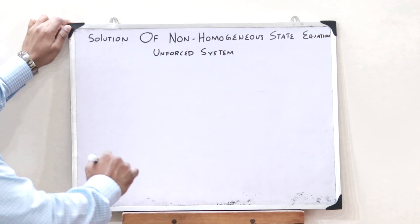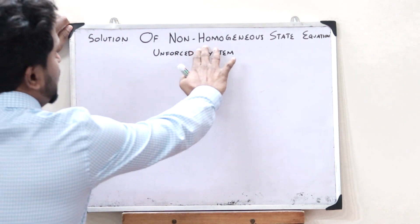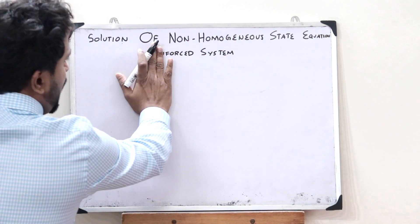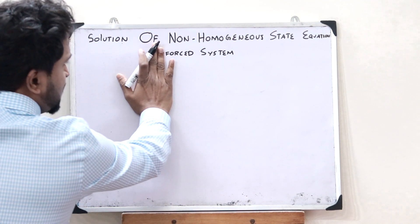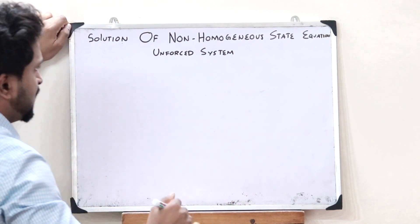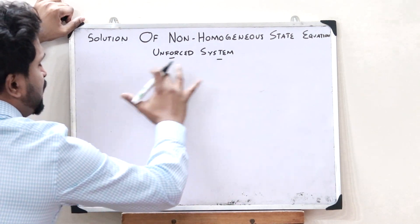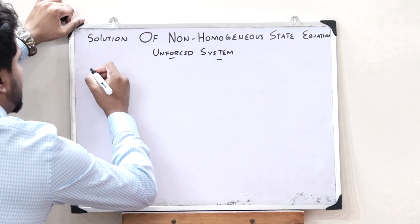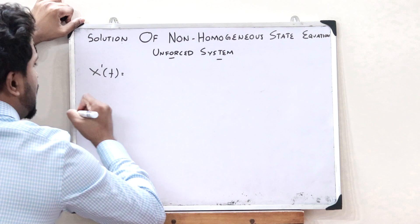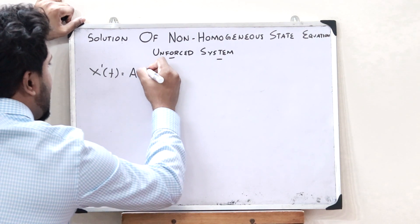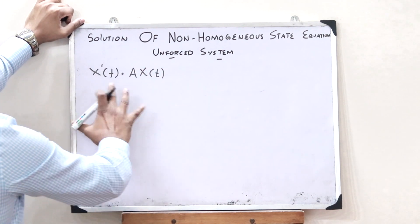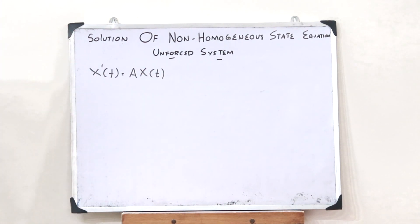In the previous video, we saw the case of a solution of a non-homogeneous state equation in the case of a forced system. But now, the difference between a forced system and an unforced system is with the state equation. So in the case of an unforced system, the state equation is given as x'(t) = A · x(t). This is the state equation of an unforced system.